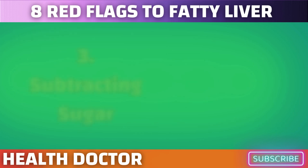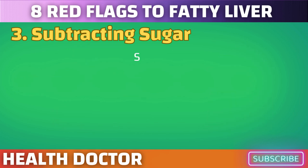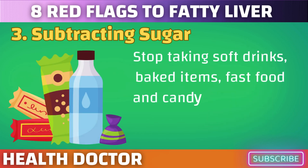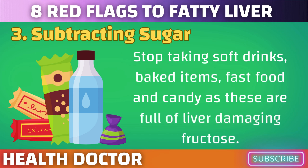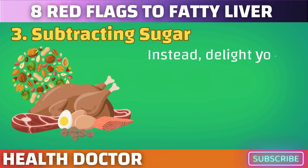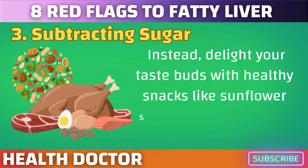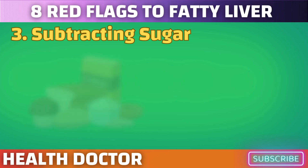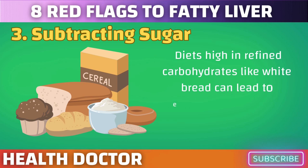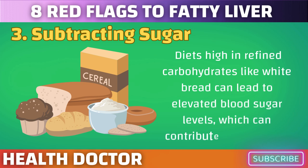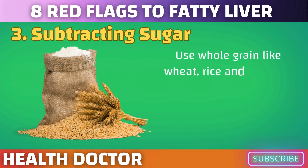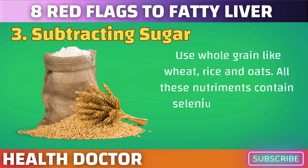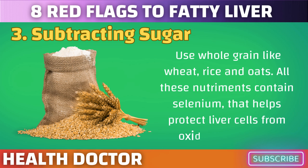Stop taking soft drinks, baked items, fast food, and candy, as these are full of liver-damaging fructose. Instead, enjoy healthy snacks like sunflower seeds, nuts, fresh eggs, and lean meats. Diets high in refined carbohydrates like white bread can lead to elevated blood sugar levels, which can contribute to fatty liver. Use whole grains like wheat, rice, and oats. These nutrients contain selenium, which helps protect liver cells from oxidative damage.